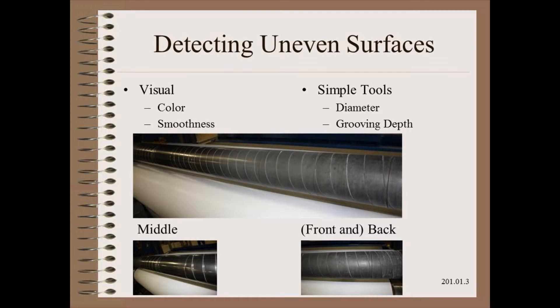Instead, you could measure diameter profile across the width and presume that the profile was accurately ground to begin with. This is usually a good assumption as most new rubber covers are consistent to a hair's breadth and most metal rollers are to one half to one tenth of a hair's breadth. Diameter is best measured by a micrometer but also can be done well with a pie tape, provided that the mechanic is experienced in its use. Least accurate is to measure the depth of the grooving with a depth gauge, as this tends to be not as accurately cut. In this figure, we see that any or all of the methods would indicate the same answer: the middle is worn more than the ends.